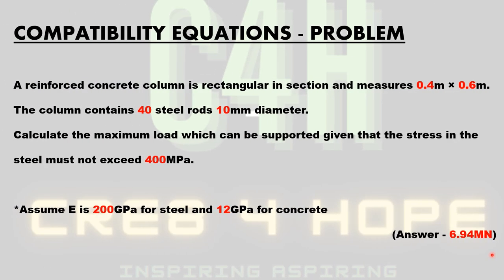Let's have a look at this problem. A reinforced concrete column is rectangular in section and measures 0.4 meters by 0.6 meters. The column contains 40 steel rods, 10 millimeters in diameter. We're tasked to calculate the maximum load which can be supported by the column, given that the stress in the steel must not exceed 400 megapascals. We assume E for steel is 200 GPa and Young's modulus for concrete is 12 GPa. We're expecting an answer of approximately 6.94 meganewtons.